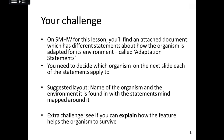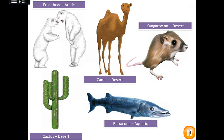Your five different organisms are these: a polar bear, which obviously lives in the Arctic — very cold; a camel that lives in the desert, which is very hot and dry; a kangaroo rat, also in the desert — hot and dry — and don't be fooled by the size of the picture, they are very small; a barracuda, which is an aquatic organism that lives in the water; and a cactus, a plant that also lives in the desert. Pause the video and see if you can work out which statements go with which animal or plant.